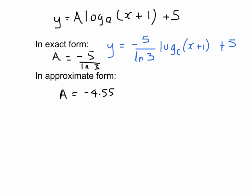And the approximate form is y equals negative 4.55 log to the base e or ln x plus 1 plus 5. Remembering, of course, that ln is equivalent to log to the base e.